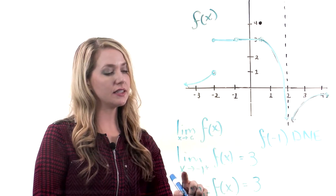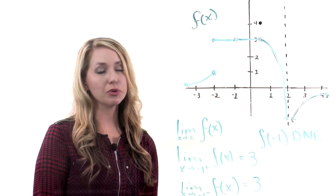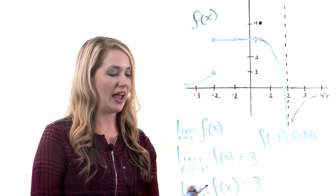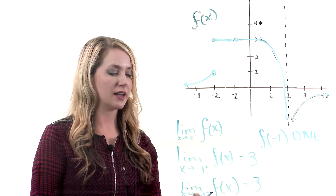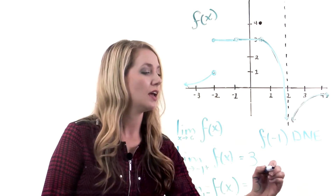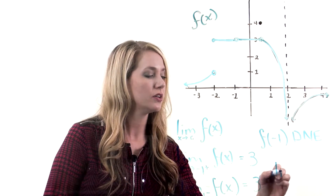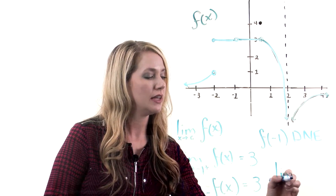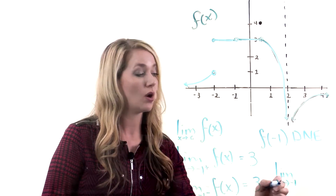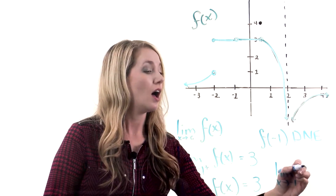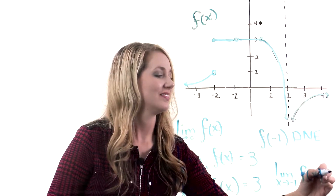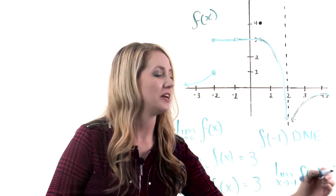Since the limit as x approaches negative 1 from the right is 3, and the limit as x approaches negative 1 from the left is 3, I can conclude the limit as x approaches negative 1 from either direction is 3.